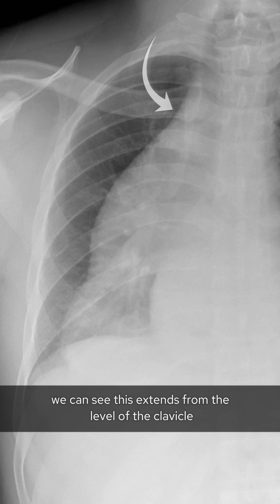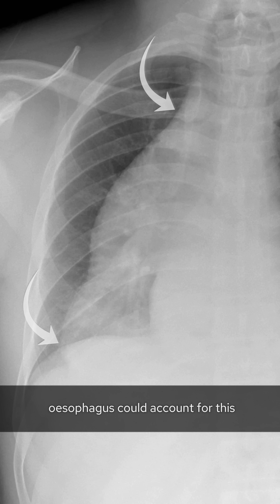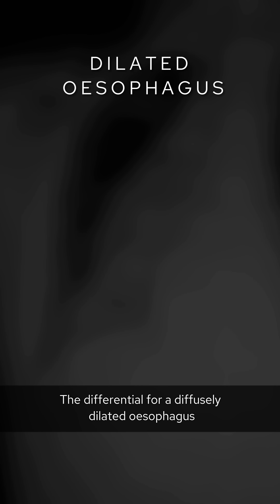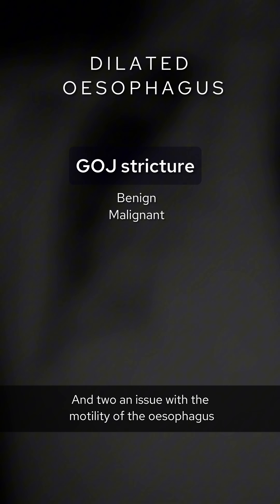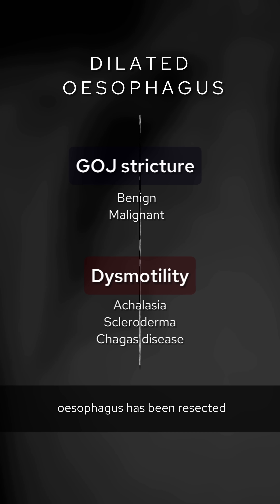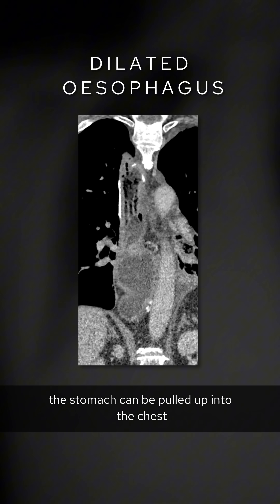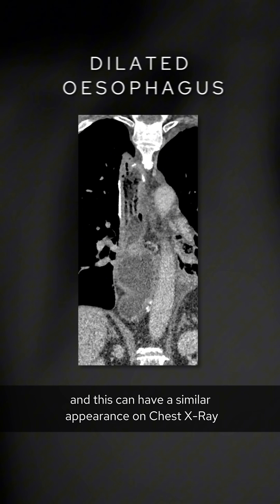With our lesion, we can see this extends from the level of the clavicle all the way down to the diaphragm, so a completely dilated esophagus could account for this. The differential for a diffusely dilated esophagus can be split into two: one, a stricture at the gastroesophageal junction, either benign or malignant; and two, an issue with the motility of the esophagus, where we consider achalasia, scleroderma, and Chagas disease. If the esophagus has been resected, the stomach can be pulled up into the chest — called a gastric pull-up — and this can have a similar appearance on chest x-ray.